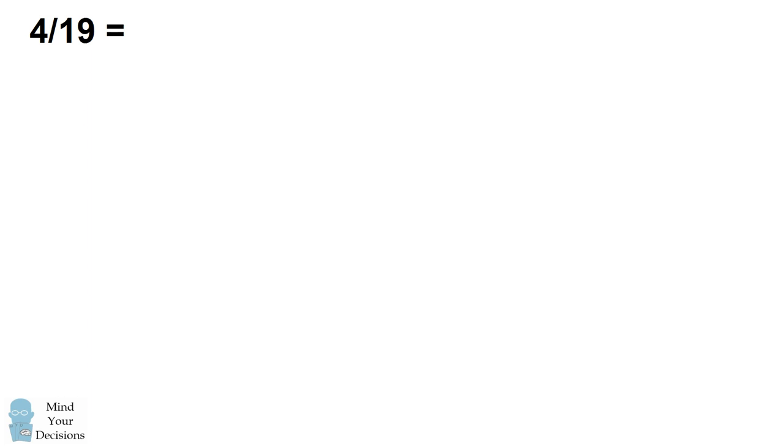For example, what is the decimal expansion of 4 over 19? To figure it out, we'll use a trick of repeatedly dividing by 2.